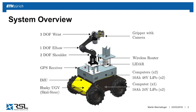We have a LiDAR sensor — the 3D laser sensor you already used for the ROS bag. We also have a GPS receiver and a router, so the robot has its own network.